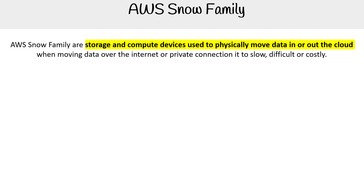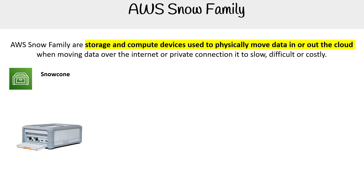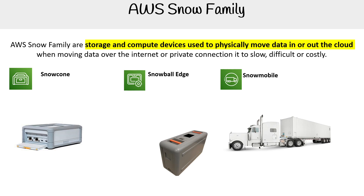Let's take a look first at Snow Cone — so there it is — then we have Snow Edge, and then we have Snowmobile. So those are our three sizes. There used to be one called just Snowball, but they retired that, and so now we just have Snowball Edge. We'll talk about each of these individually and their specs.